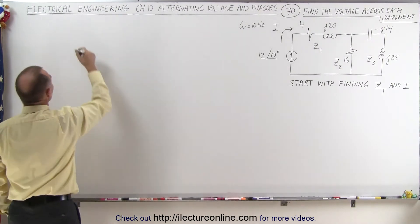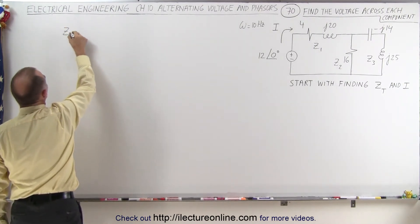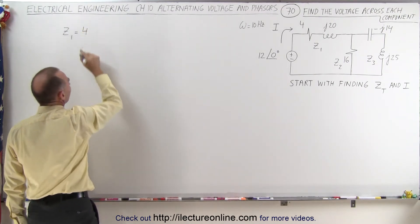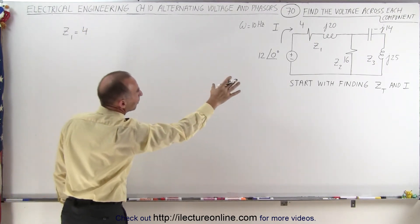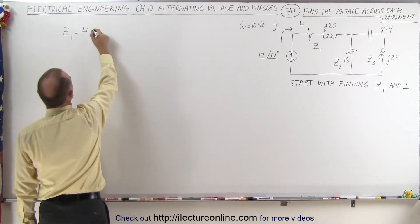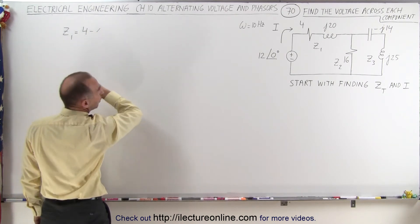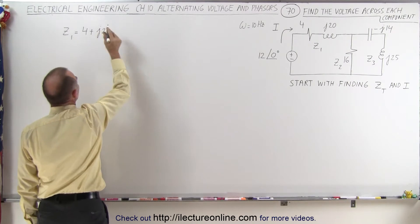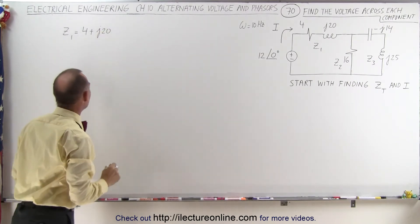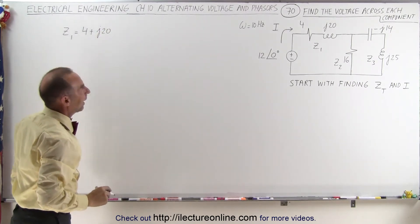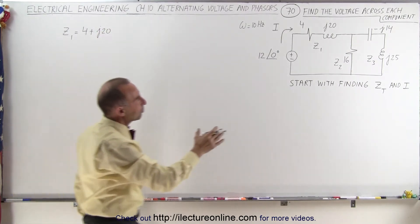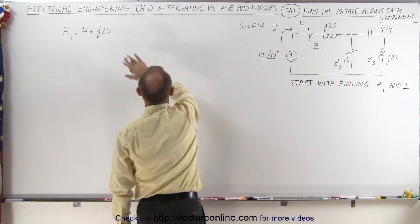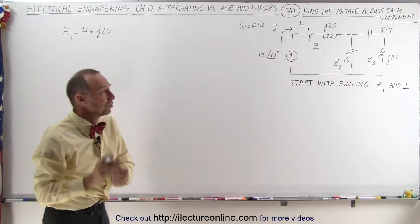Z1 is equal to a real part of 4 ohms for the resistor and an imaginary part of plus 20 ohms — plus because it's an inductor. So Z1 is 4 + j20 ohms. We're going to have to add that to the parallel branches, so we'll leave it in this format for now.